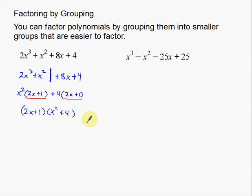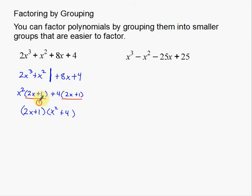One thing you usually have to check is whether this remaining expression is factorable. In this case, x squared plus 4 is not factorable. Sometimes with these x squared expressions you'll be able to factor further, but in this case we can't. That's as far as we can factor this one.